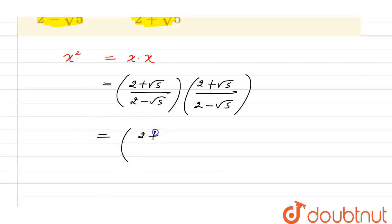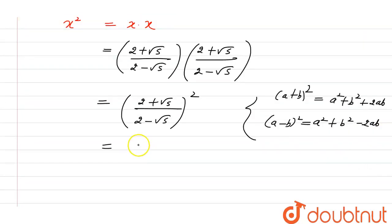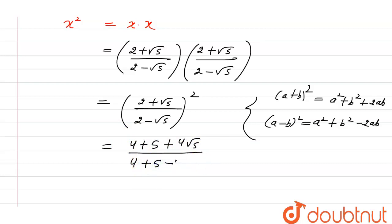We can see that the numerator is (2 + √5)² and the denominator is (2 - √5)². We use the formula (a + b)² = a² + b² + 2ab for the numerator and (a - b)² = a² + b² - 2ab for the denominator. This gives us (9 + 4√5) divided by (9 - 4√5). This is the value of x².